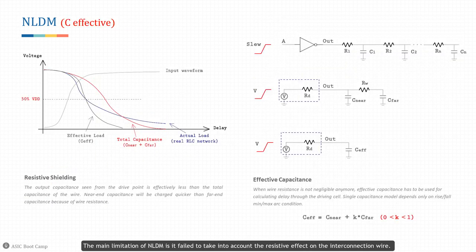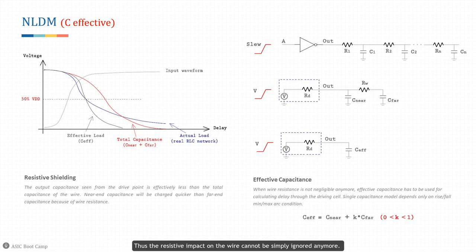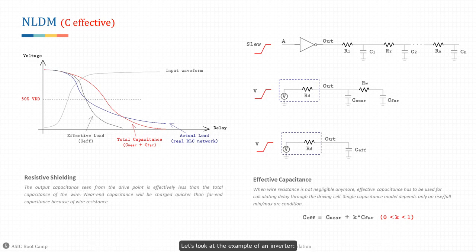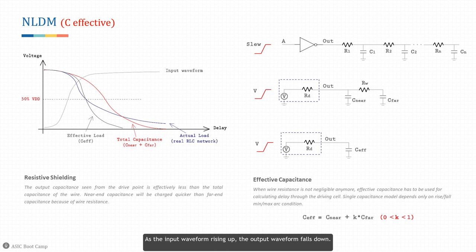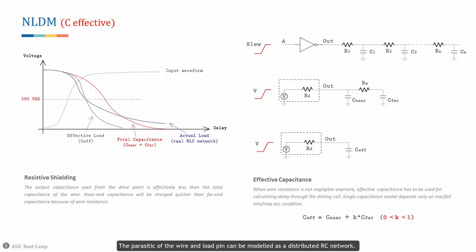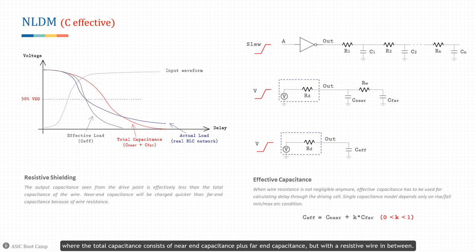The main limitation of NLDM is that it fails to account for resistive effects on interconnection wire. In deep submicron technology, the impedance of the net is in a comparable range with the driver resistance, so the resistive impact on the wire cannot simply be ignored. The cell output waveform with RC load is very different from the waveform with a single capacitive load. As the input waveform rises, the output waveform falls — the parasitic of the wire and load pin can be modeled as a distributed RC network, further estimated by an RC-Pi model where total capacitance consists of near-end capacitance plus far-end capacitance with a resistive wire in between.